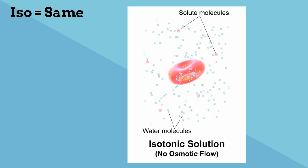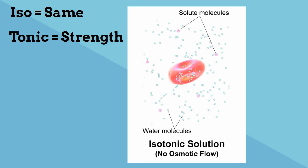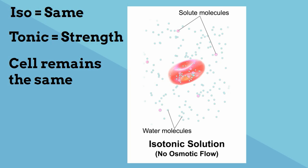Isotonic — 'iso' means the same and 'tonic' means strength. An isotonic solution has the same concentration of solute inside and outside of the cell, so therefore the cell remains the same.